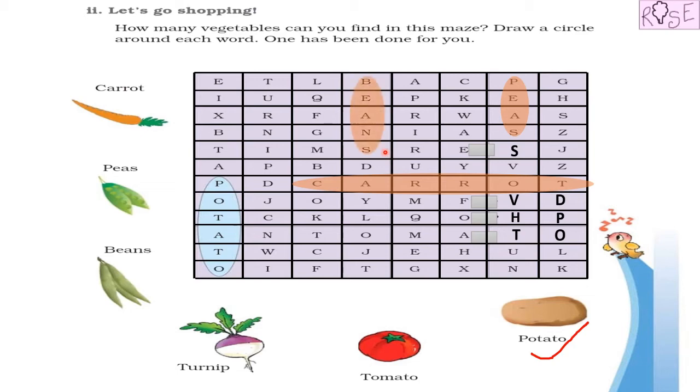Now the next word, or the next vegetable, is turnip. Turnip, where is turnip? Oh, just here! We found it, turnip. Very nice. It was so near to the beans, right? That's why it was so easy to find out.